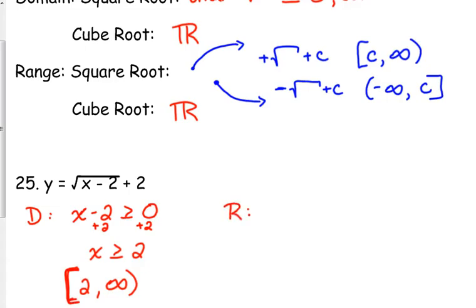For the range, it is a positive square root, so it's going up to infinity, and the number on the end is positive 2. So in this case, the domain and range are the same thing.